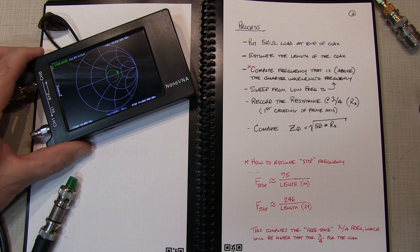So we can see the process to measure the impedance of an unknown hunk of coax is actually pretty simple. So I hope you learned something.